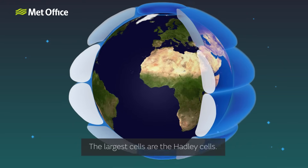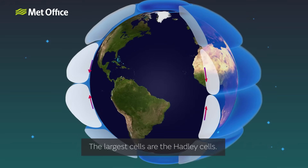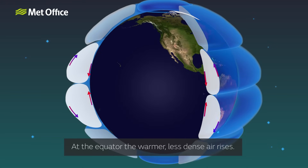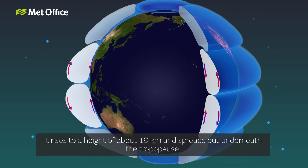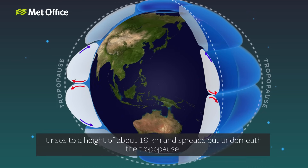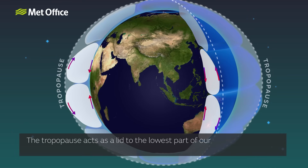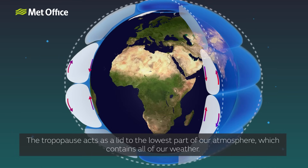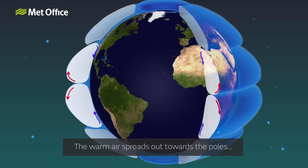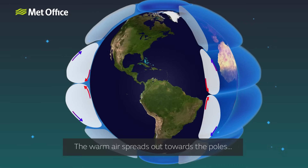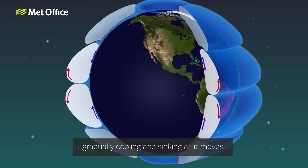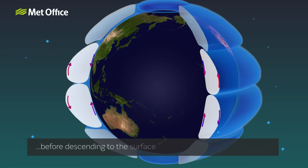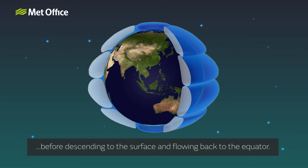The largest cells are the Hadley cells. At the equator, the warmer, less dense air rises to a height of about 18 kilometres and spreads out underneath the tropopause. The tropopause acts as a lid to the lowest part of our atmosphere, which contains all of our weather. The warm air spreads out towards the poles, gradually cooling and sinking as it moves, before descending to the surface and flowing back to the equator.